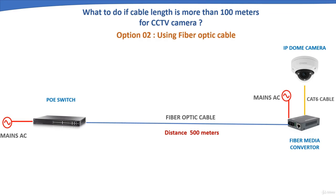The second option is fiber optic cable. This option is very helpful and can transmit data over a very great distance — up to a few kilometers. It is also very immune to noise and interference from electromagnetic and radio frequency signals. A fiber optic cable is laid from a network switch to the camera using a fiber media converter.